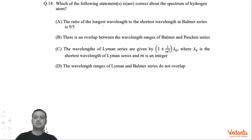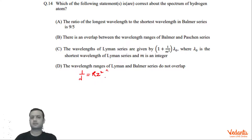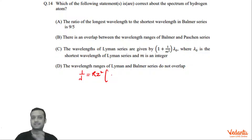The question asks for the ratio of the longest wavelength to the shortest wavelength in the Balmer series. To find the longest wavelength, we use 1/λ = R·Z², where Z = 1 for hydrogen. For the Balmer series, the longest wavelength corresponds to the smallest energy transition, which is from n = 3 to n = 2. So that gives us 1/4 minus 1/9.